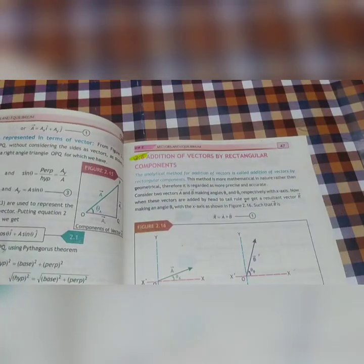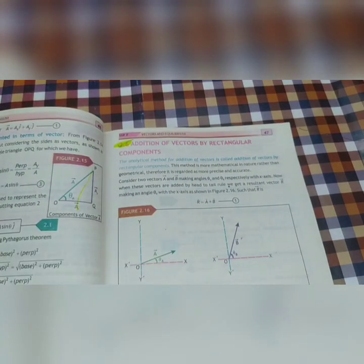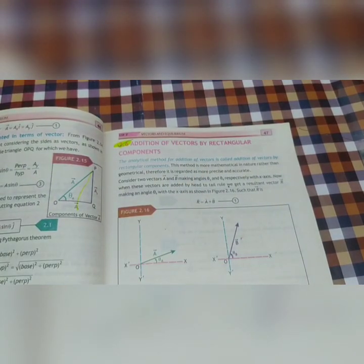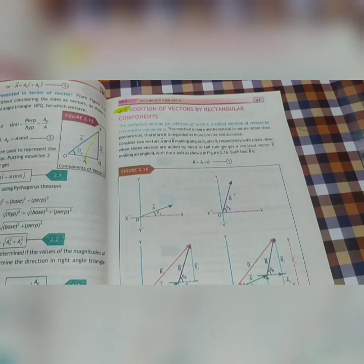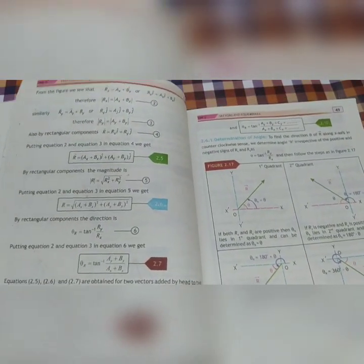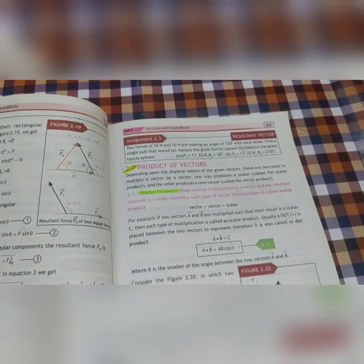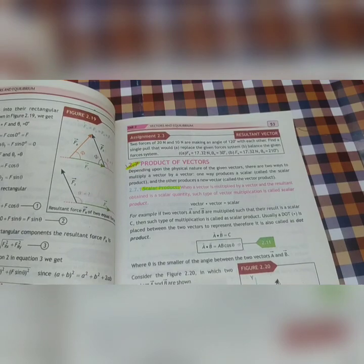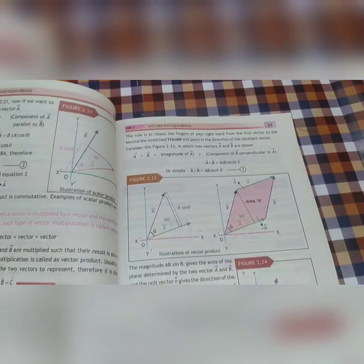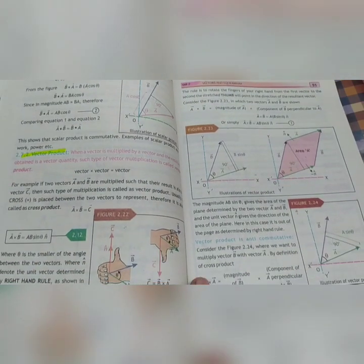Then Chapter Number 2, Vectors and Equilibrium. You need to prepare 2.6 topics. Vector Addition by Rectangular Components, complete topic. Then you will get Product of Vectors 2.7, Scalar and Vector Products.